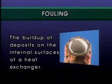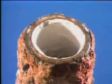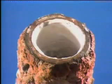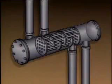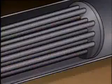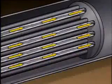Fouling is a term that's often used to describe the buildup of deposits on the internal surfaces of the heat exchanger. When fouling occurs, the result is an additional layer of material that heat must pass through. This additional layer reduces the ability of the unit to transfer heat. Also, if the buildup becomes excessive, the flow of fluids through the unit may be restricted. Fouling can be caused by many things. One common cause is impurities in the fluids passing through the heat exchanger.